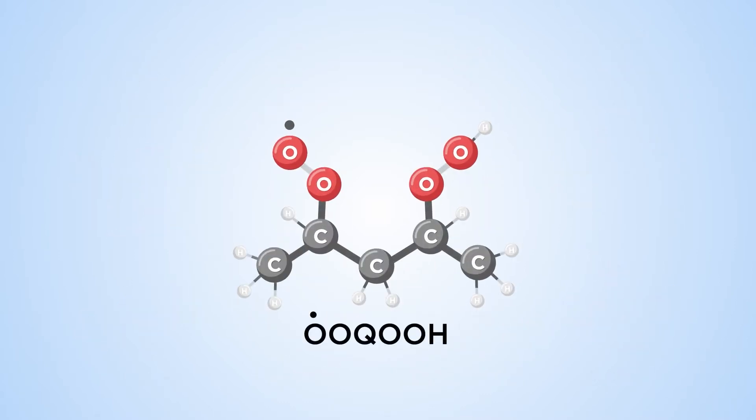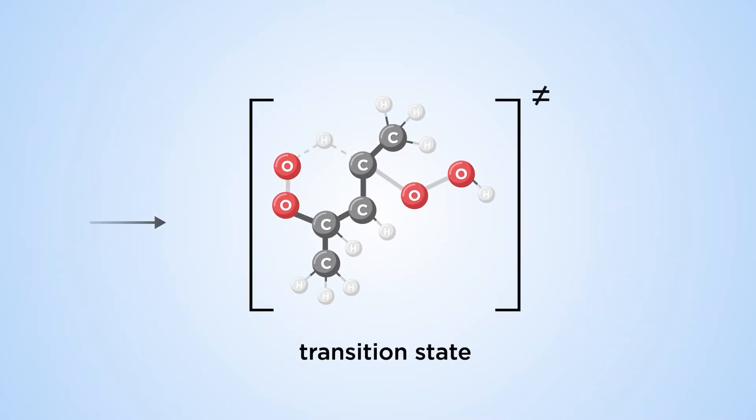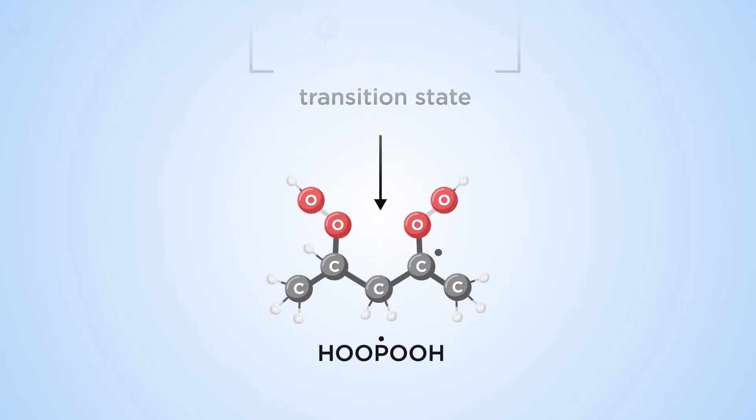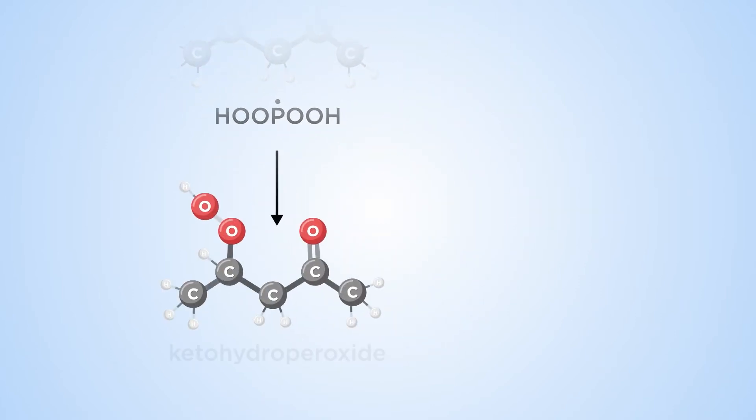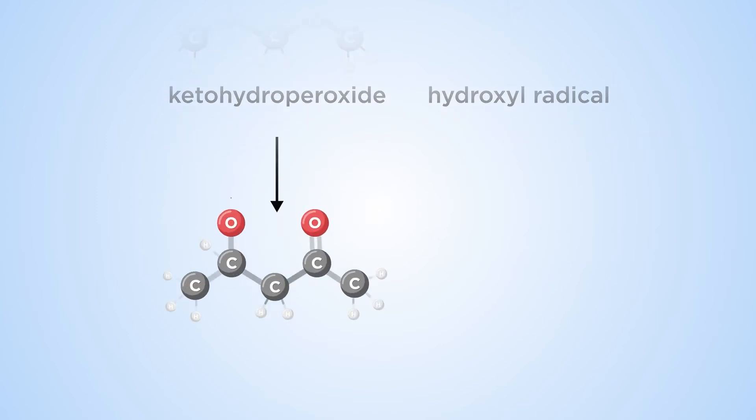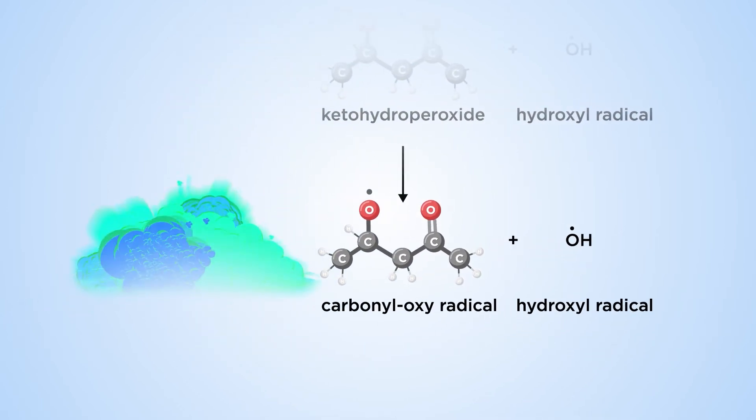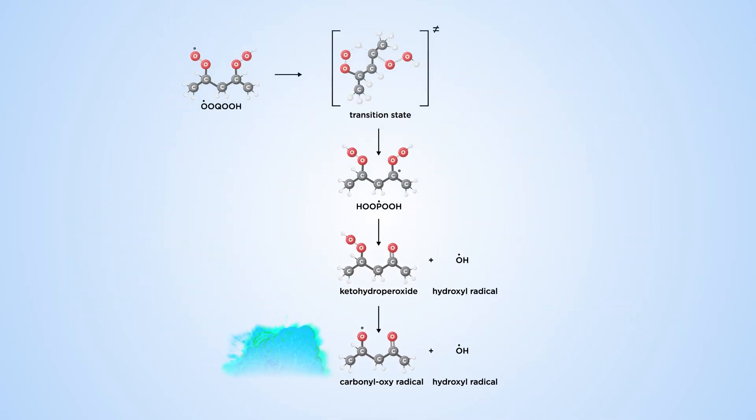Ignition is the acceleration of combustion caused by a multiplication in the number of reactive radicals, a process called chain branching, which at low temperature is initiated from a class of intermediates called ketohydroperoxides.